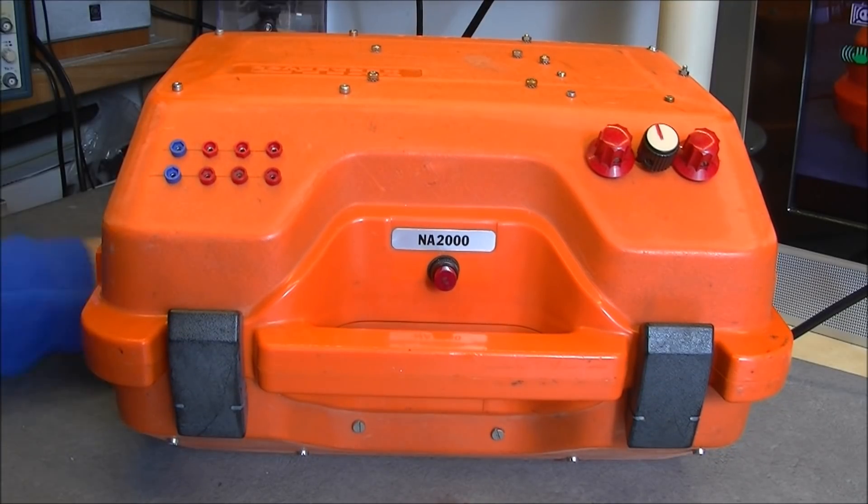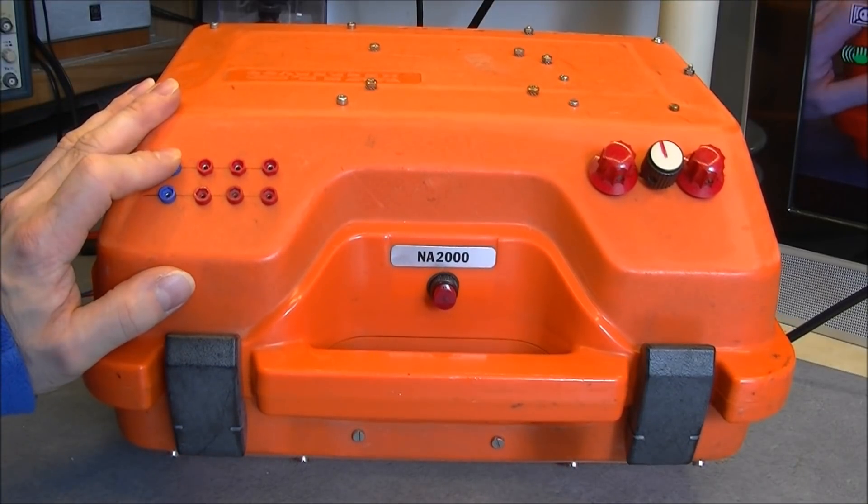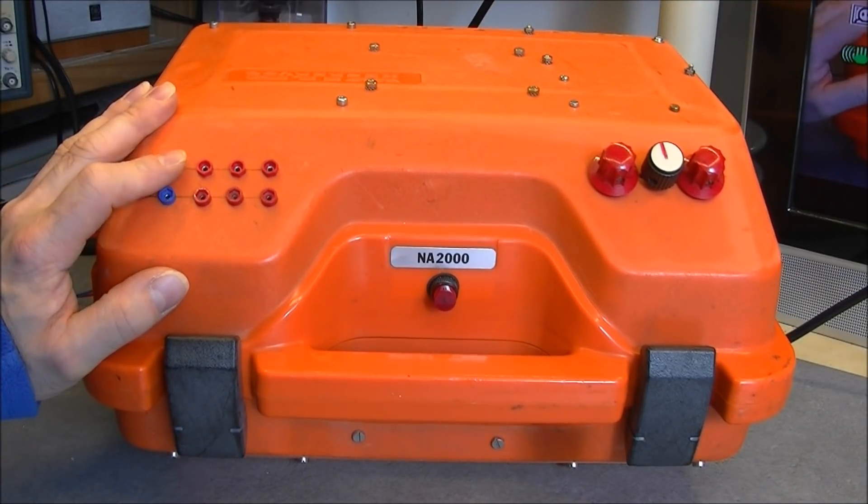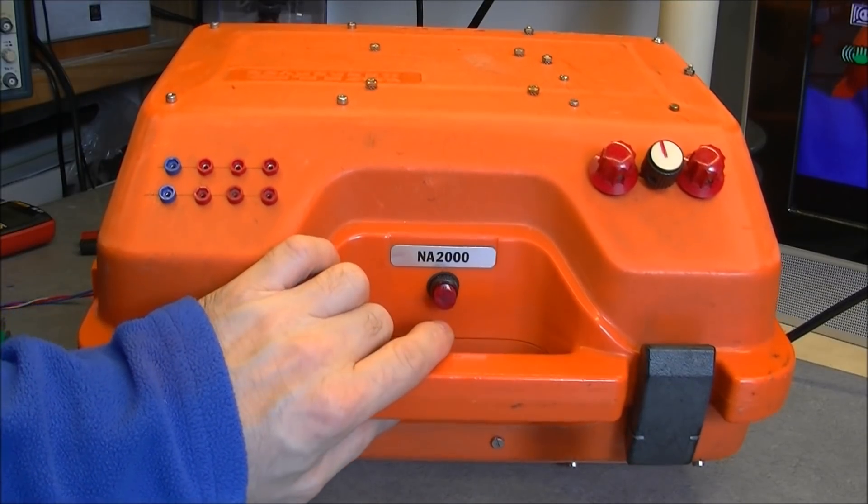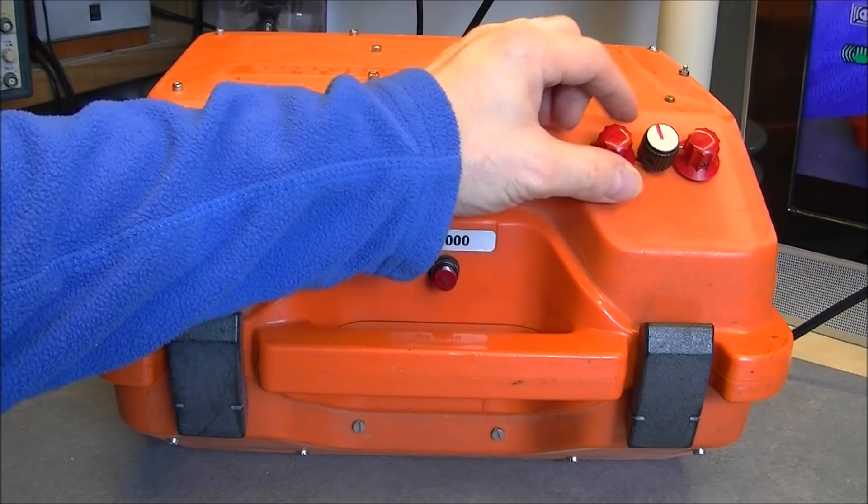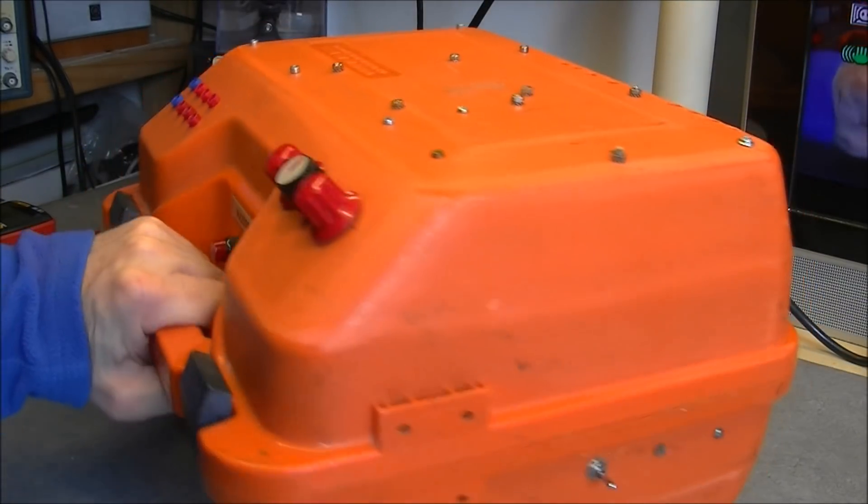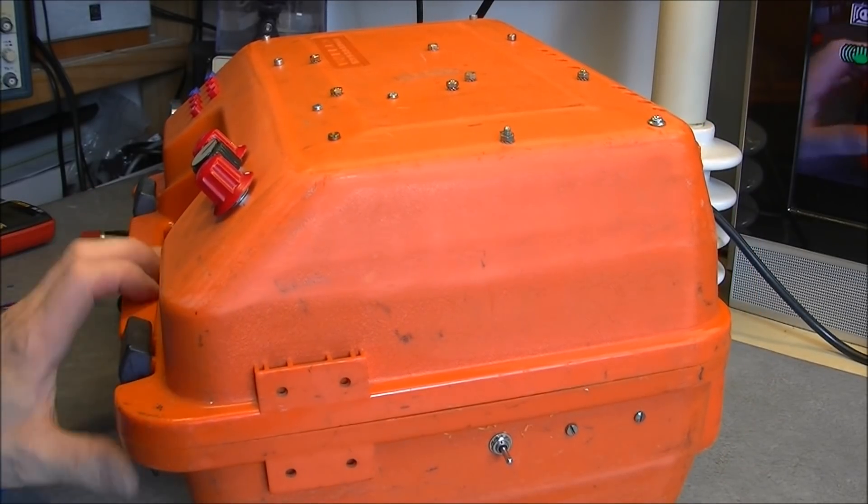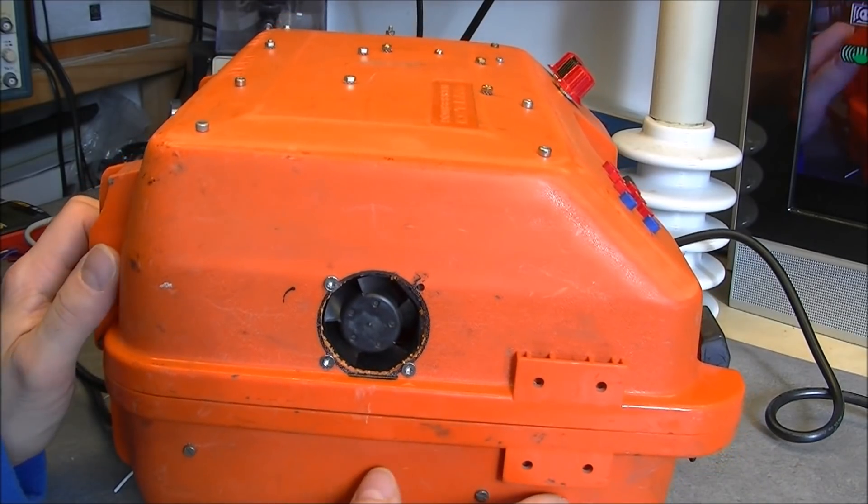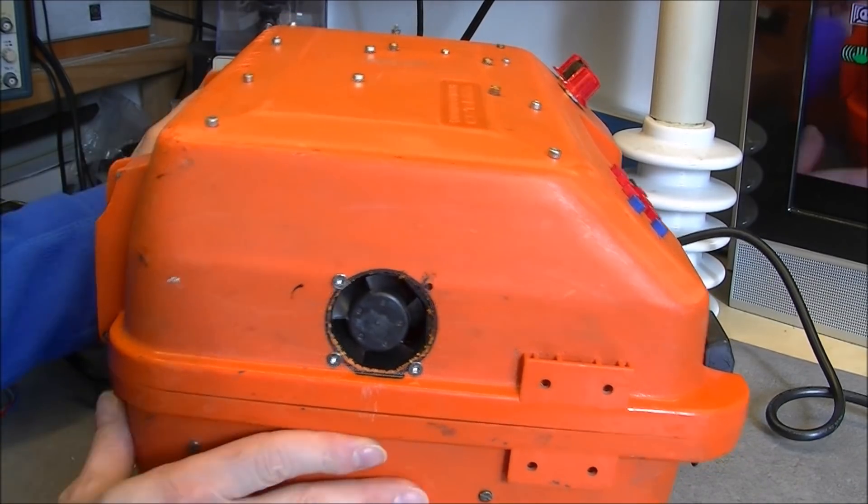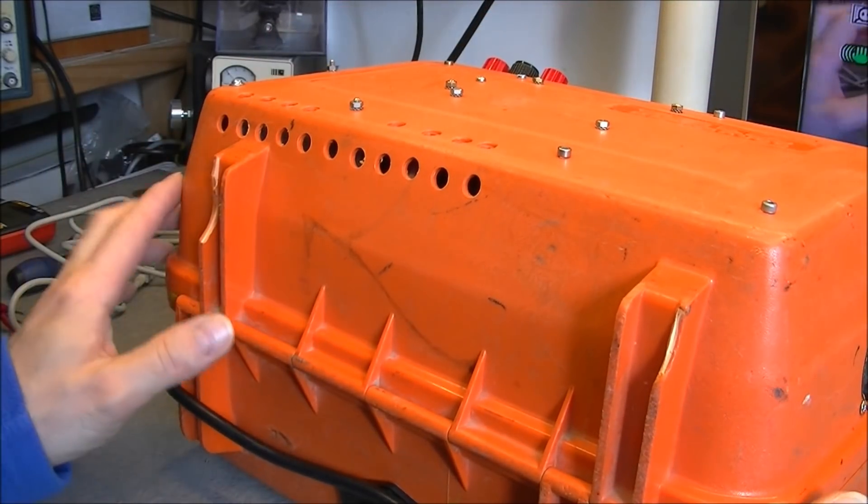So we will have a look around. So these are obviously the outputs on mini banana plugs, power light here, the potentiometers to adjust each one of the three amplifiers inside, button for internal fan, fan here in case it is needed, and power input and a lot of venting holes.